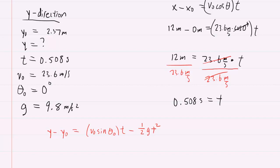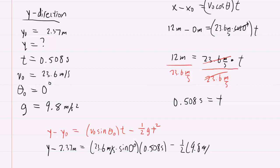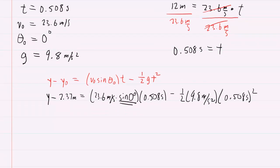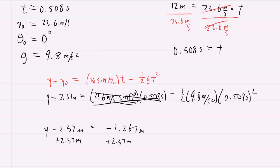Plugging in the known information: y minus 2.37 meters equals 23.6 meters per second times sine of 0 degrees times time, minus 1.5 times g times time squared. Since sine of 0 is 0, that entire first term zeros out. So we have y minus 2.37 meters equals negative 1.5 times 9.8 times (0.508)² which gives about negative 1.267 meters. Adding 2.37 to both sides gives a final y-coordinate of 1.10 meters.